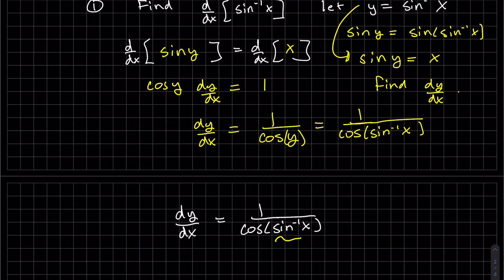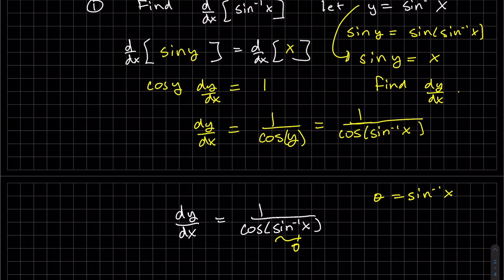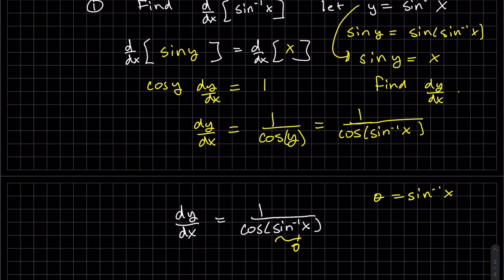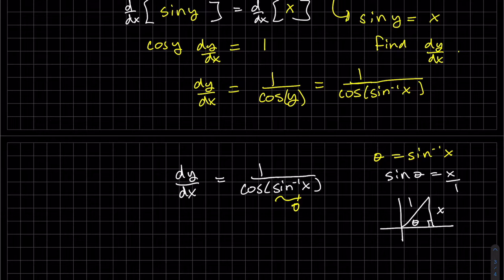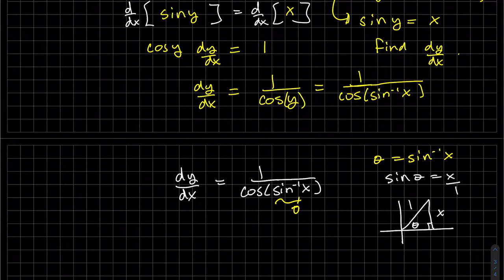So we want the cosine of this angle. The inverse function is an angle. So we'll call theta equal to the sine inverse of x. We're going to sketch that out. Or if you want to look at it this way, take the sine of both sides. And that's a ratio. Sine of theta is the opposite over hypotenuse. And we want to know what the cosine of that angle is. That's our goal.